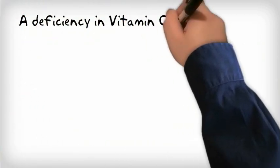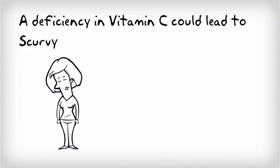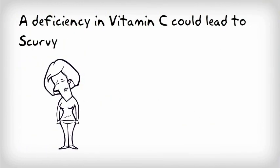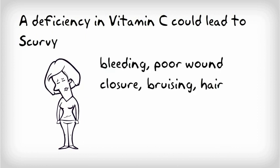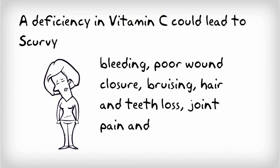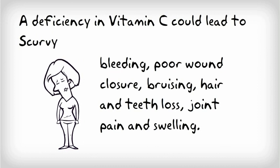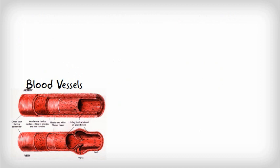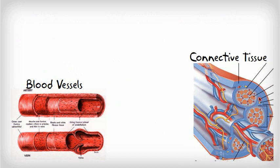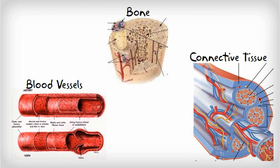A deficiency in vitamin C could lead to a condition called scurvy. Symptoms of scurvy include bleeding, poor wound closure, bruising easily, hair and teeth loss, joint pain, and swelling. This is related to the weakening of blood vessels, connective tissue, and bone, which all contain collagen.